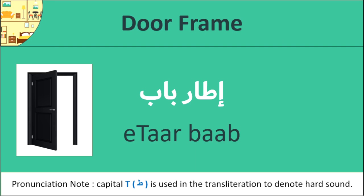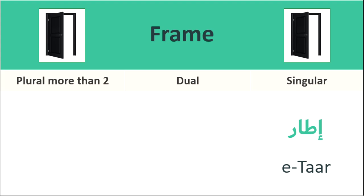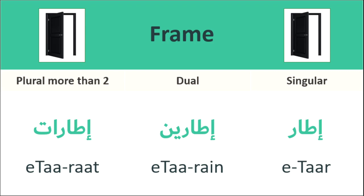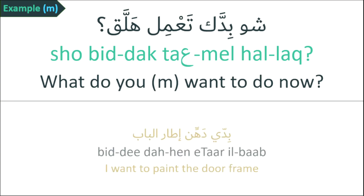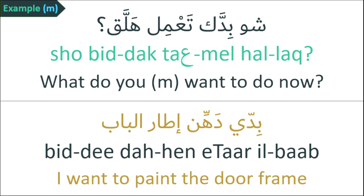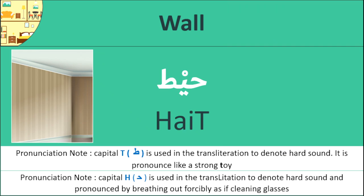Doorframe. The singular form is 'itar', the dual form is 'itarine', and the plural form is 'itarat'. For example, talking to a man: 'What do you want to do now?' The reply is: 'I want to paint the doorframe.'